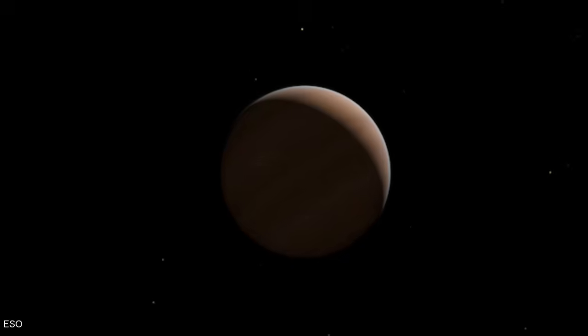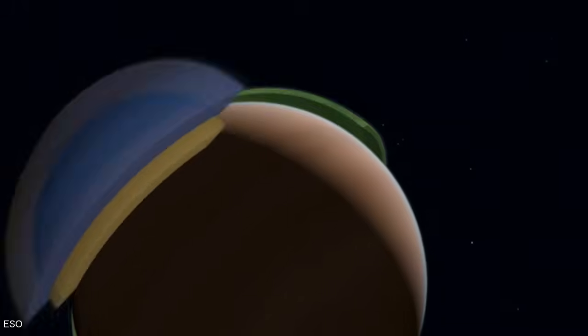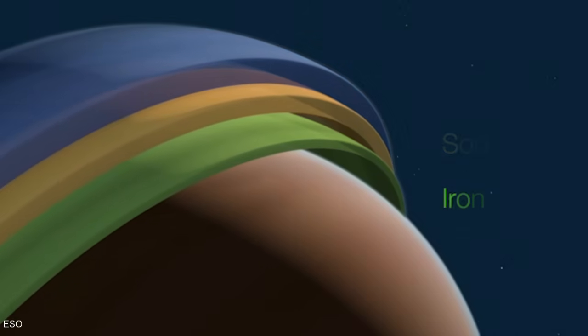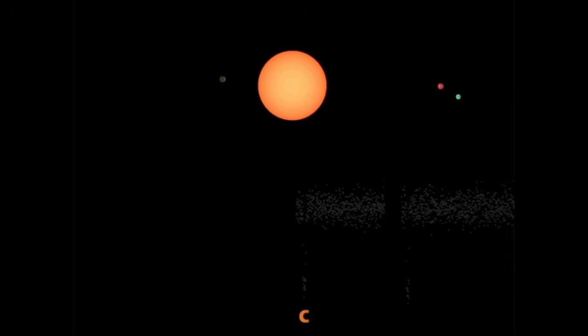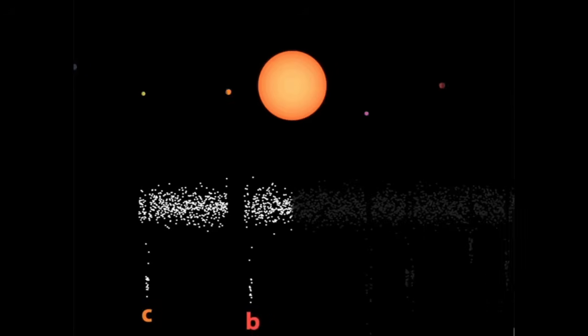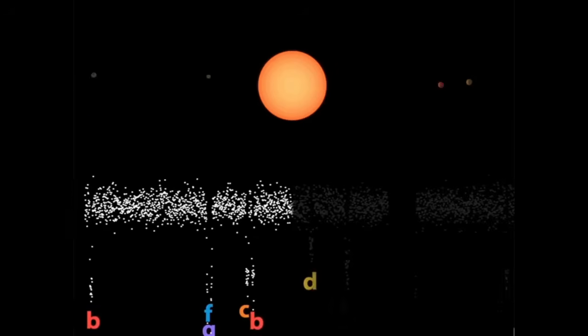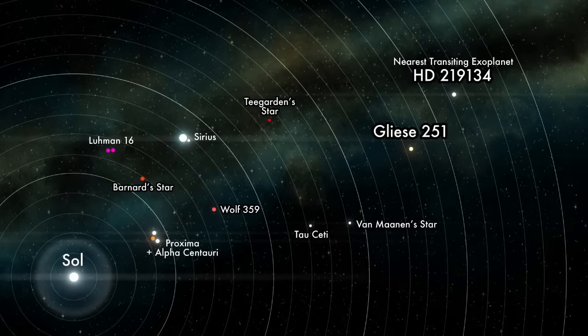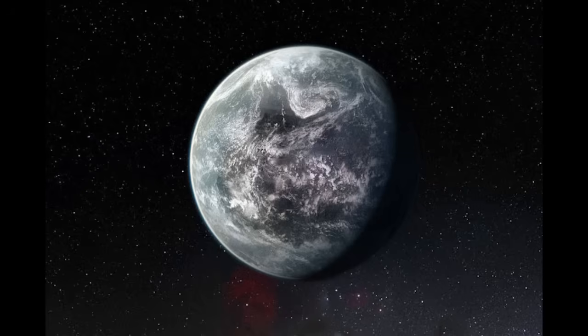This matters because direct imaging is the only means to study the atmospheric composition of planets other than transits. And transits, which rely on precise alignments with our line of sight from Earth, are extremely rare. The closest known transiting exoplanet is 22 light-years away, and we are unlikely to find any nearer. If we want to confirm the existence of an Earth-like planet in our stellar neighborhood, direct imaging is likely the only way we'll do it.